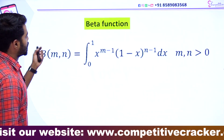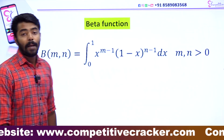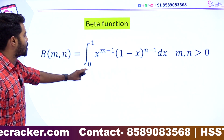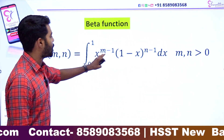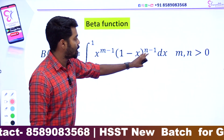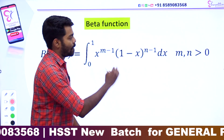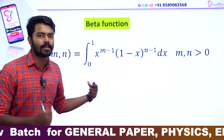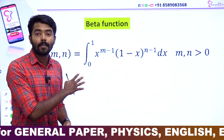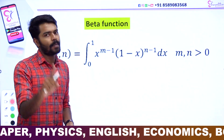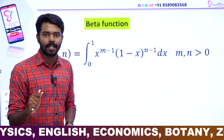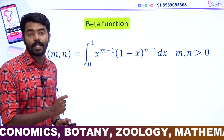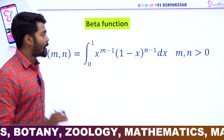This is a very important equation. Beta function. Beta of m is equal to integral 0 to 1, x raise to m minus 1, 1 minus x raise to n minus 1 dx, where m is greater than 0. You will need to use the value of this function. We will need to see the function. The main function of the real function is the problem.